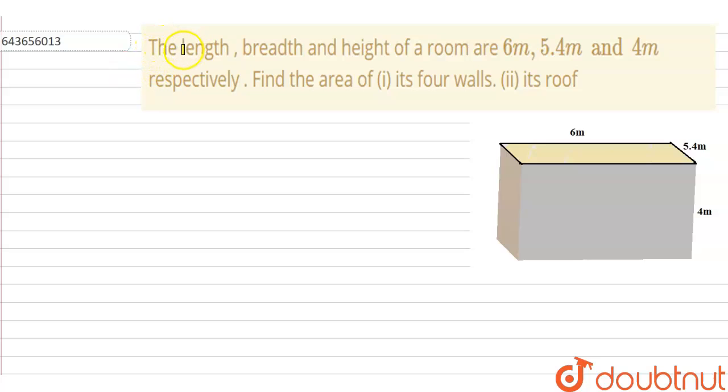Hello everyone. The question is: the length, breadth, and height of a room are 6 meter, 5.4 meter, and 4 meter respectively.